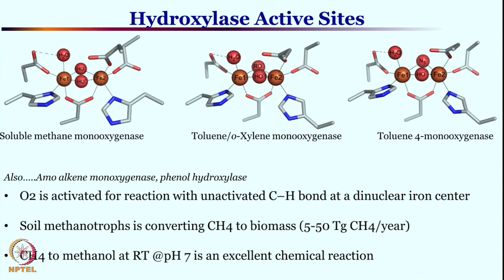We have seen such unsymmetrical iron sites in hemerythrin. This active site is responsible for methane monooxygenase activity — that means methane is converted to methanol at this site. As you know, methane to methanol transformation is the most difficult transformation one can perhaps think of, precisely due to the fact that methane has a 104 kcal/mol bond dissociation energy.